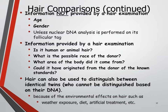Here is what hair examinations do tell us: we can figure out if we're looking at a human or an animal hair, the possible race of the person, what area of the body the hair came from, and if it could have come from a donor of known standards. Hair can also be used to distinguish between identical twins. Fingerprints are pretty much the only other thing that identical twins don't share — their hair will be different and their fingerprints are different. DNA has slight differences but not enough that we often pick up on it.